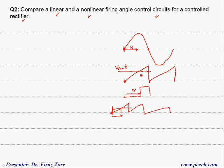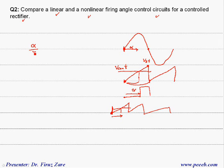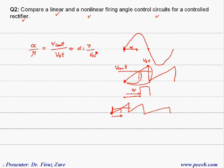The difference is that when we define the gate signal based on this control circuit, if this is V_sawtooth, we can find the firing angle. We can say that alpha over pi equals V_control over V_sawtooth, so from here we can find that alpha equals (pi over V_sawtooth) times V_control. For example, in a single phase control rectifier with pure inductive load, the output voltage for full wave is 2Vm over pi times cosine alpha.